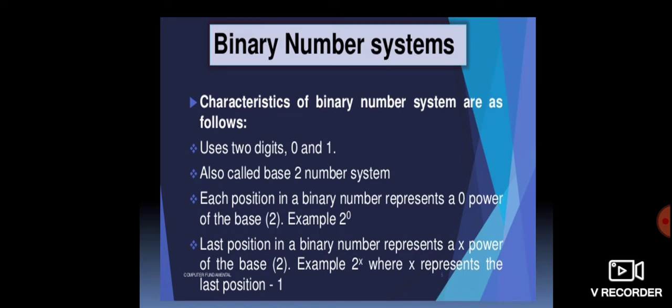The characteristics of the binary number system are as follows: it uses 2 digits — 0 and 1. It is also called the base 2 number system. Each position in a binary number represents a power of the base 2, starting from 2 raised to the power 0 at the rightmost position, representing the base of that position. The last position in a binary number represents 2 raised to the power x.